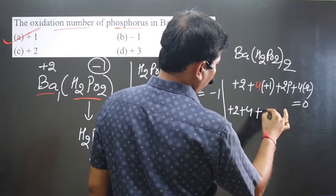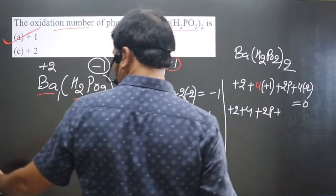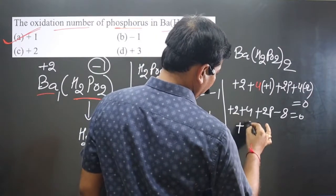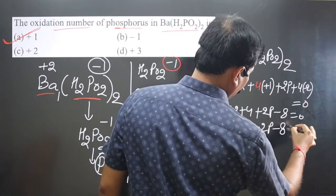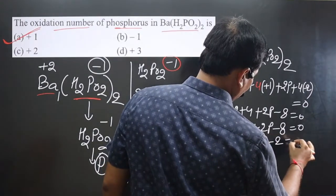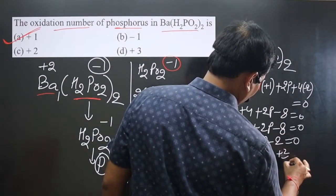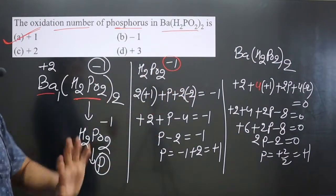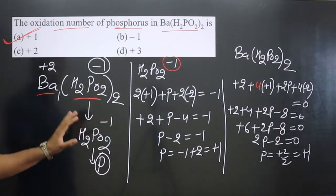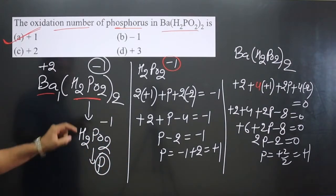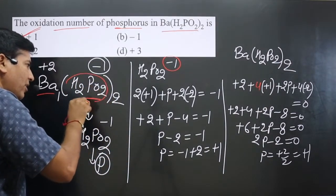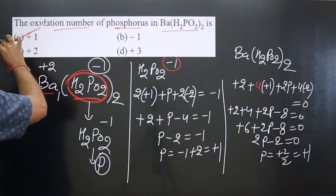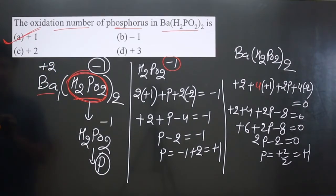Simplifying: +2 + 4 + 2P − 8 = 0, so +6 + 2P − 8 = 0, giving 2P − 2 = 0, so P = +1. By both methods we get phosphorus in the +1 oxidation state. This simpler second method involves finding the charge of the polyatomic ion group containing phosphorus. The correct answer is option A.